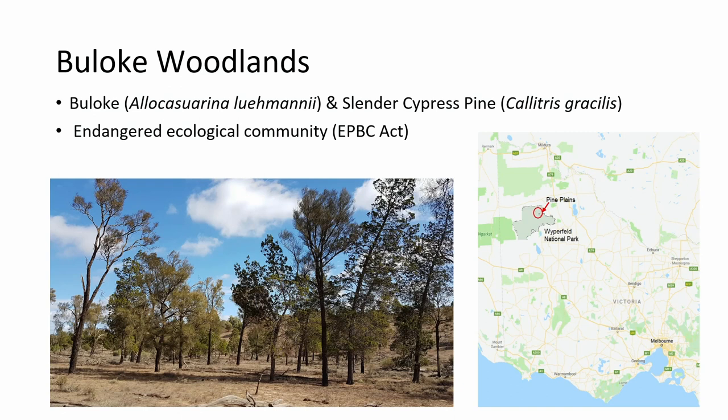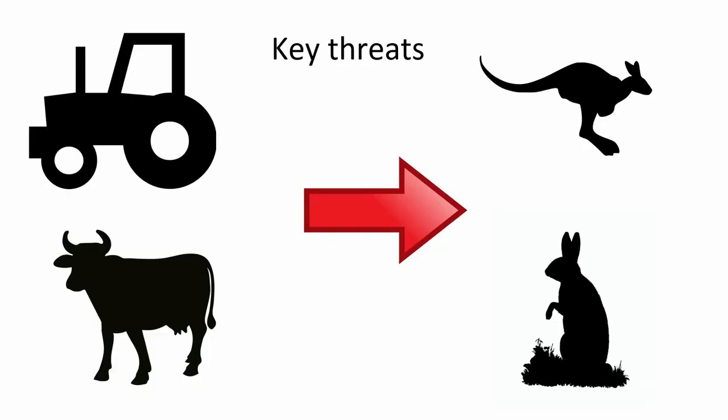So before I talk to you about measuring grass, I want to talk about why we care — why is that important? It's because of these bull oak woodlands up in the Mallee. These are an endangered ecological community found throughout the Murray-Darling Basin, but they've been greatly reduced because of extensive historical clearing for grazing and agriculture. Even though many stands are now in national parks, they're still grazed by rabbits, kangaroos, and goats, which inhibit regeneration. In some areas there hasn't been any regeneration for several decades, which is really worrying.